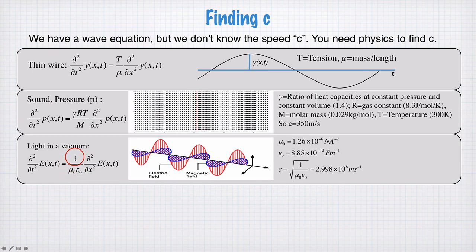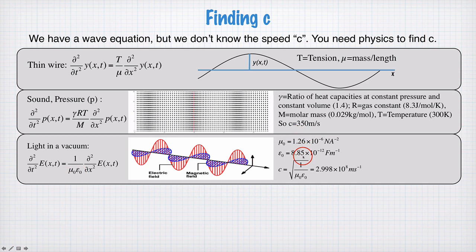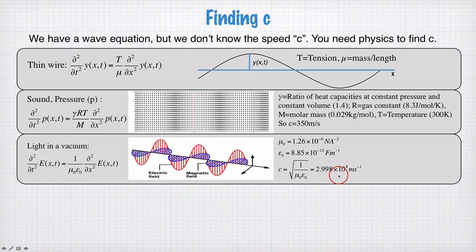c squared is given by 1 divided by mu nought epsilon nought. And plugging these values in, we get the speed to be this, which is in fact the speed of light.